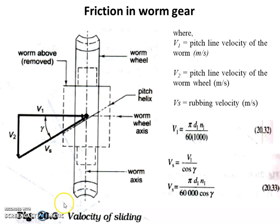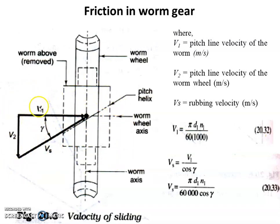It has been observed that the coefficient of friction in worm gear drives depends on rubbing speed. If V1 is the pitch line velocity of the worm and V2 is the pitch line velocity of the worm wheel, then the resultant of V1 and V2 is considered as VS — the rubbing velocity — also in meters per second, forming a right-angle triangle.